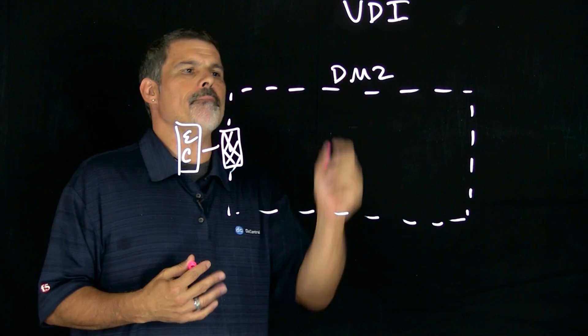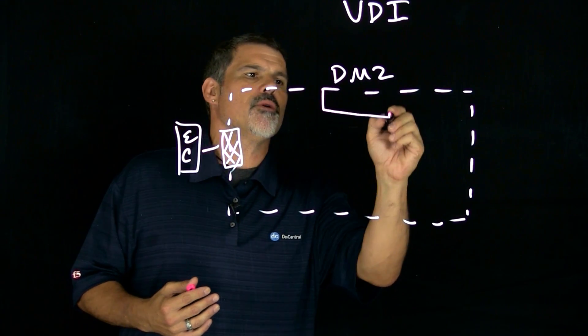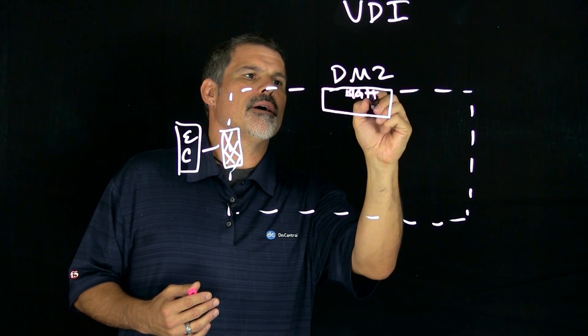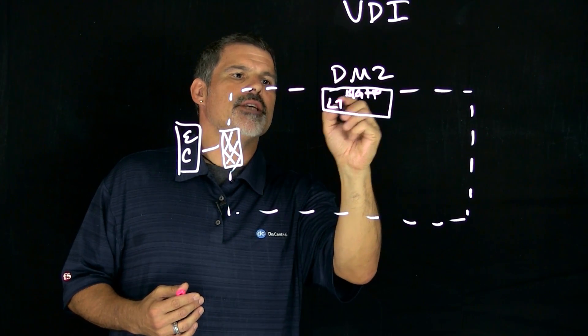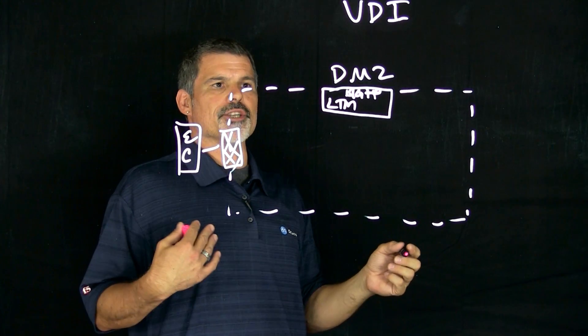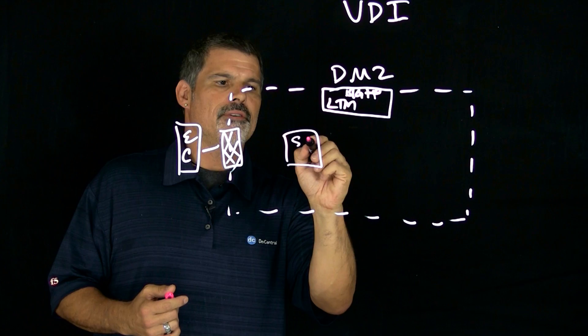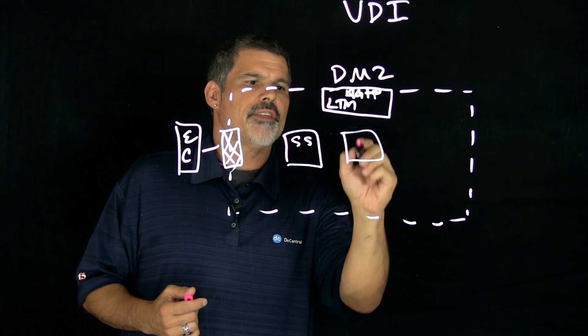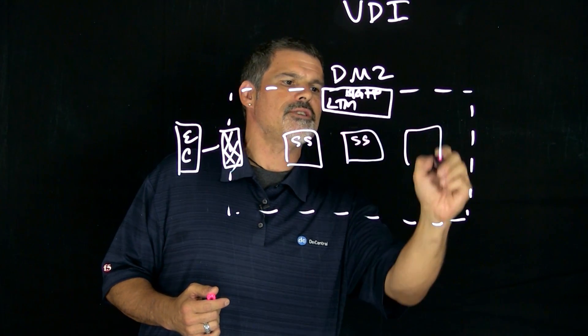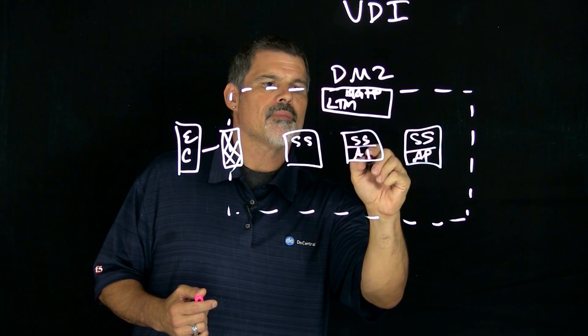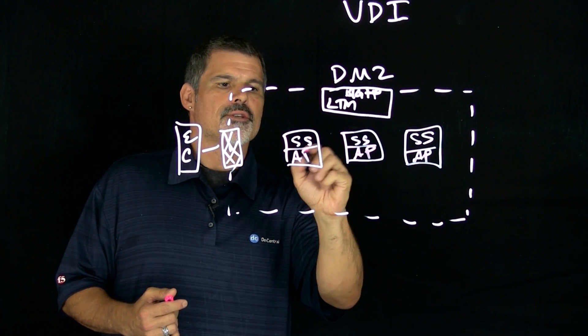And then with Big IP in the mix, typically we'll just put Big IP right here. Big IP, and it's a LTM, a local traffic manager. Also in the DMZ, in a typical deployment, you have what's called either security servers or access points.